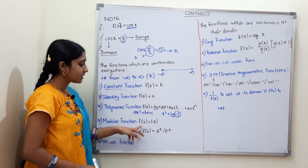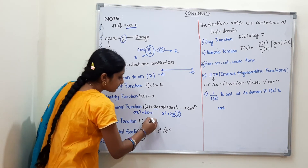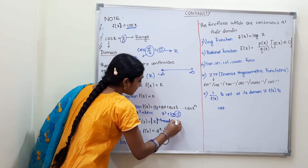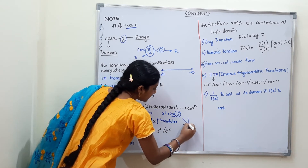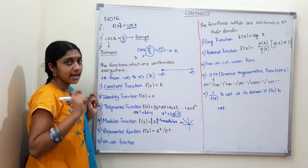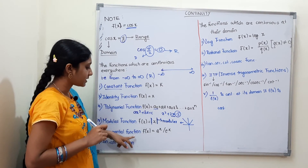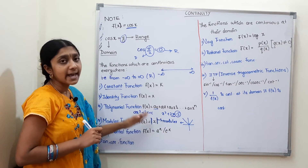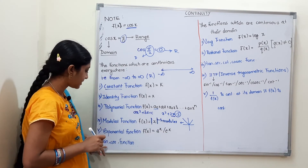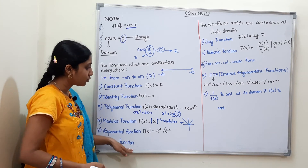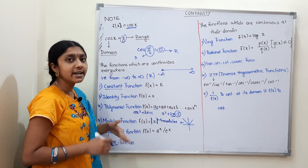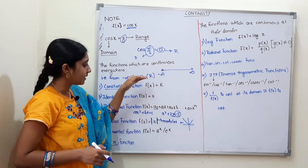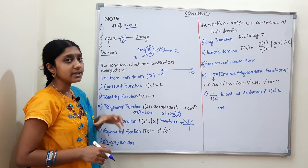Fourth: modulus function, f(x) = |x|. This is continuous everywhere. Fifth: exponential function, such as aˣ or eˣ. These are also continuous everywhere. All six of these functions are continuous over all real numbers — from minus infinity to plus infinity.